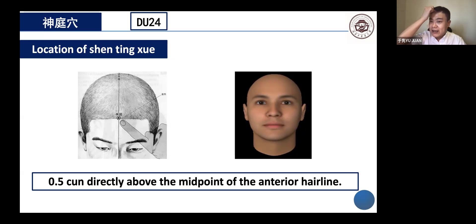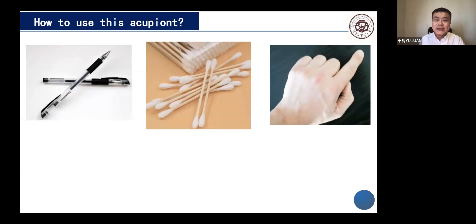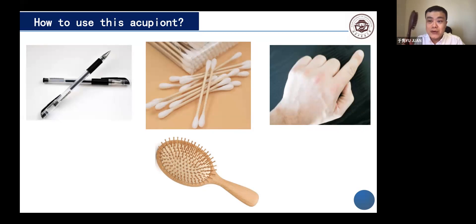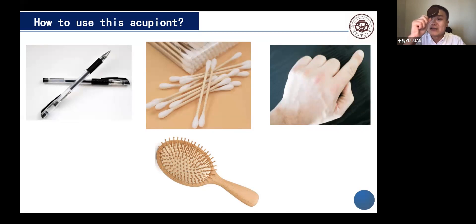Shen Ting is not very hard to find, and it also has a function to adjust mind function. You can also use your pen, cotton stick, or thumb to self-massage it. Since this acupoint is also located on the Du meridian, you could use a comb — press it and push through the midline of your head. You can do this five to six times a day.